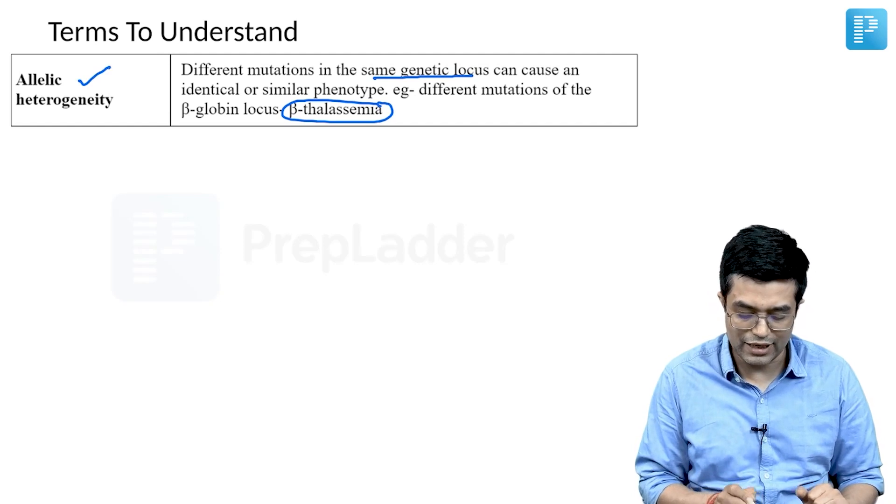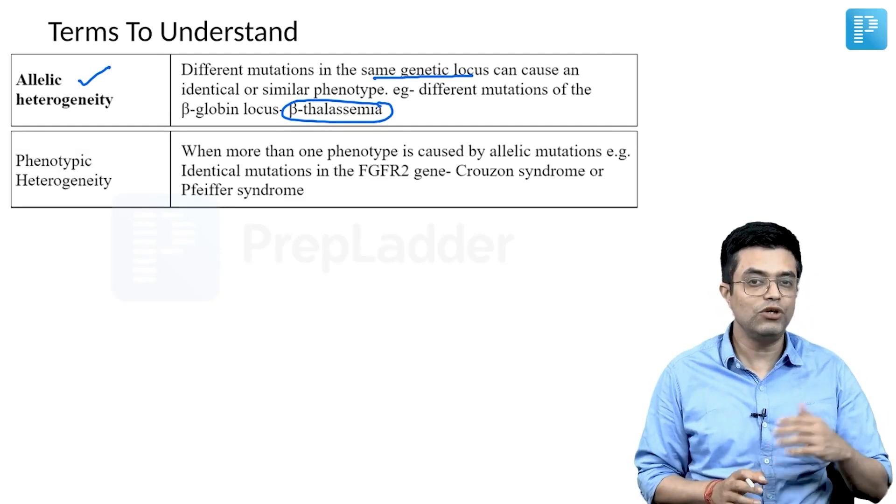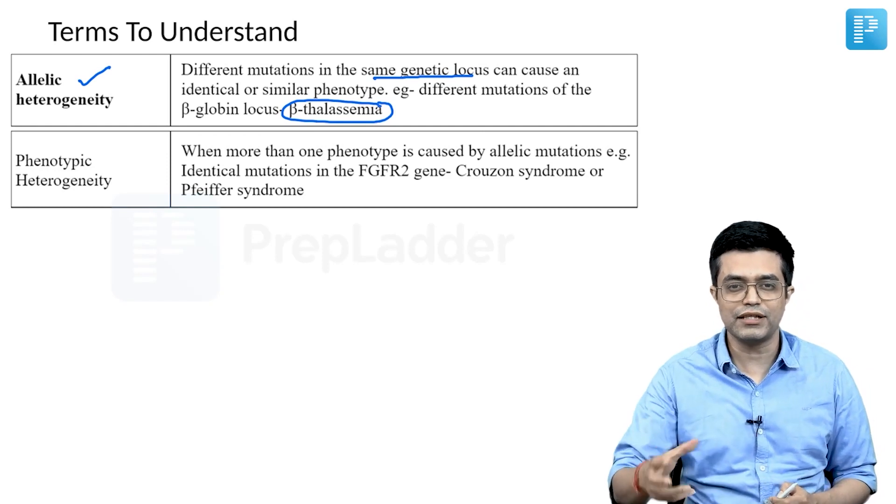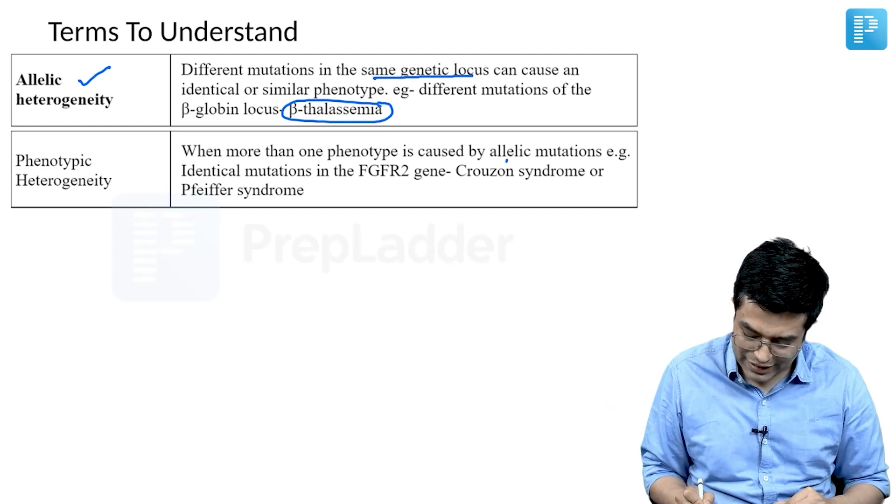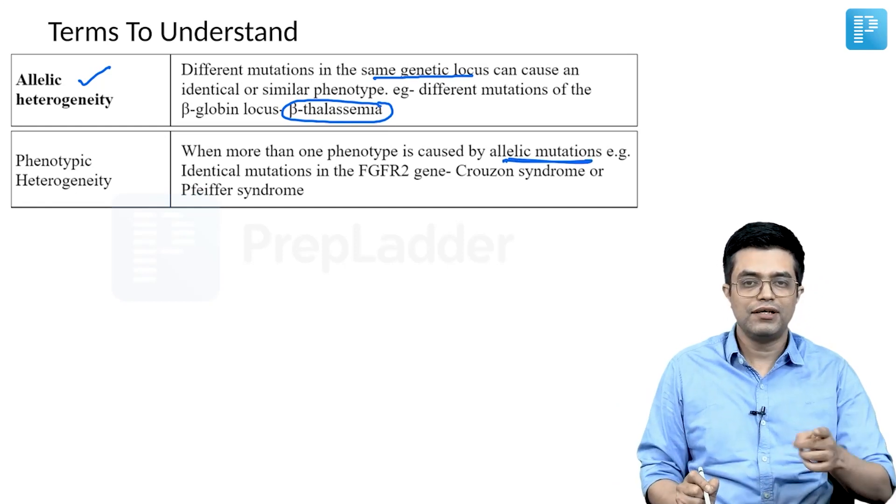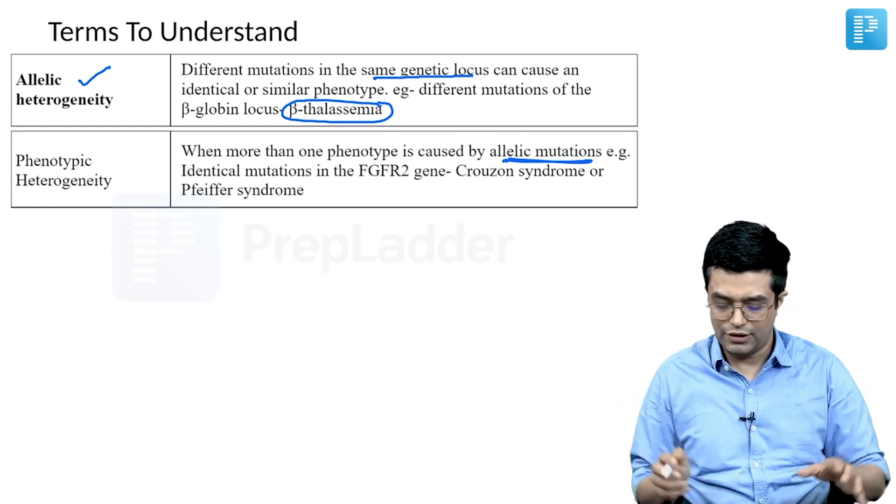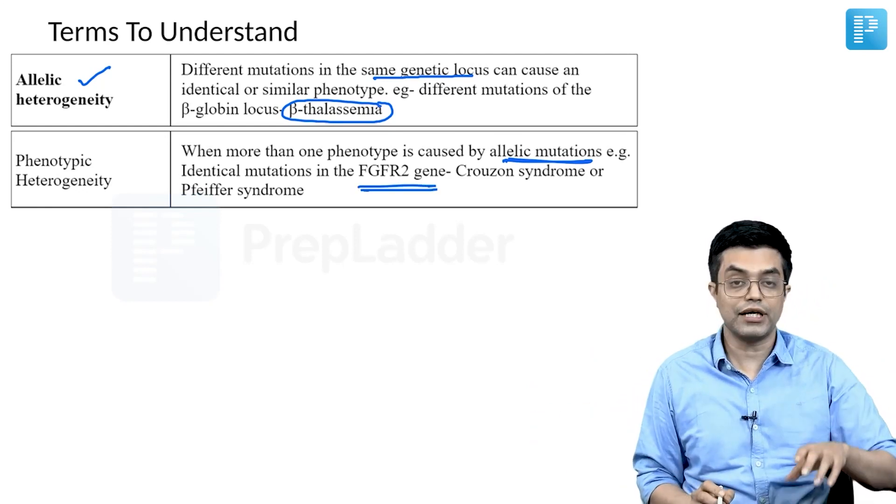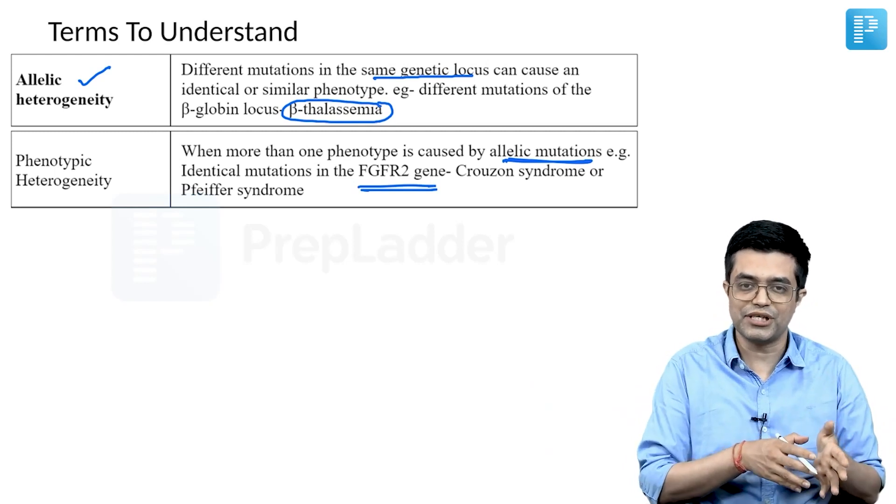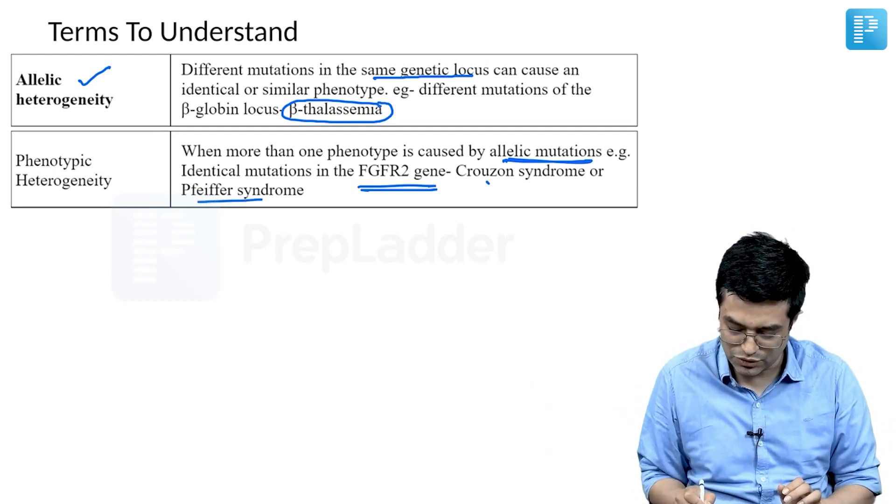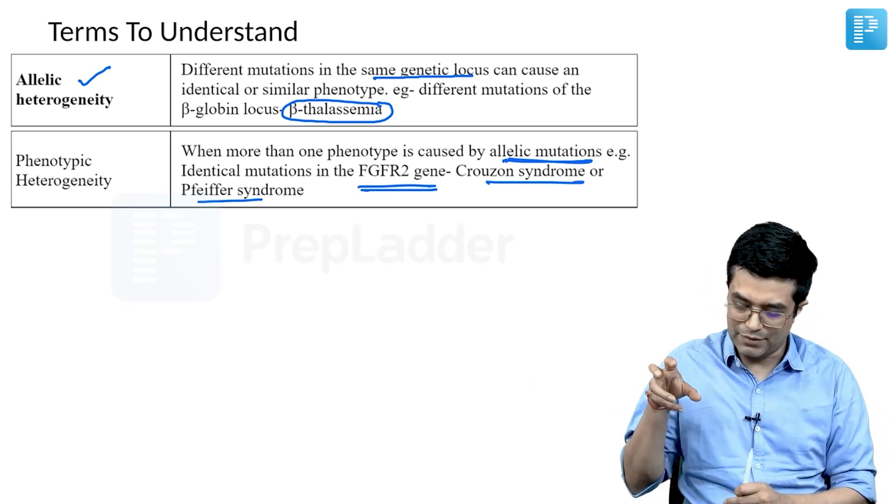The second term is phenotypic heterogeneity. The name itself says the phenotype is heterogeneous when more than one phenotype is caused by allelic mutation. For example, the same gene mutation produces different types of phenotypes. The same FGFR2 gene mutation can cause Crouzon syndrome, and a similar gene mutation can produce Pfeiffer syndrome. That is phenotypic heterogeneity - the same allele is affected but the phenotype produced is different in different situations.